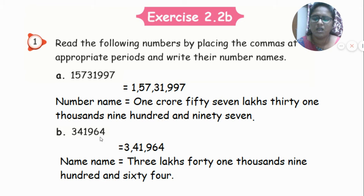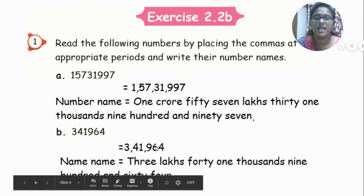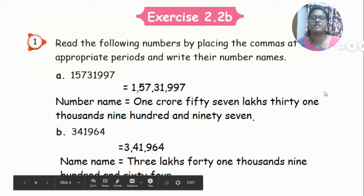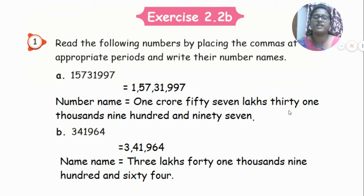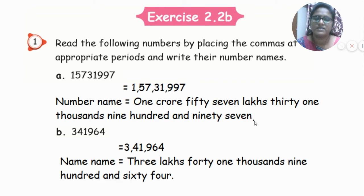Let's see the next number: 3, 4, 1, 9, 6, 4. Let's place the commas. Ones, tens, hundreds — comma — thousands, ten thousands — comma — then lakhs. How we name this number: three lakhs, forty-one thousand, nine hundred and sixty-four.